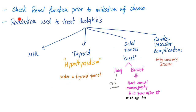You should absolutely check renal function before giving chemotherapy, because chemo can damage the kidney, and also Hodgkin's disease itself can cause nephrotic syndrome.